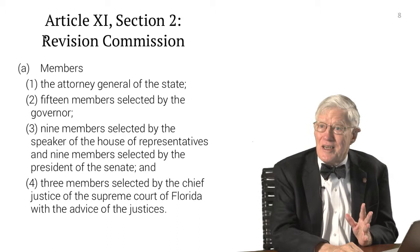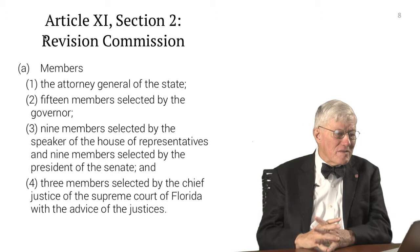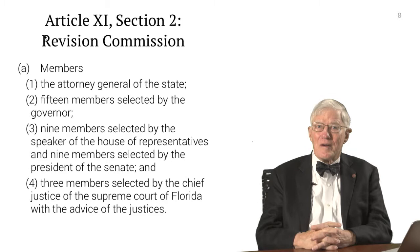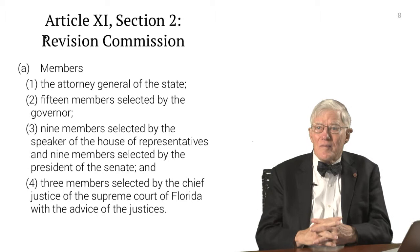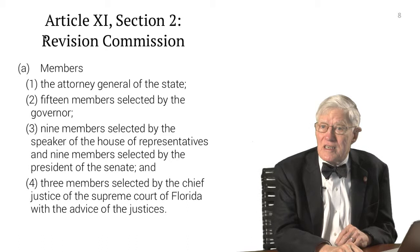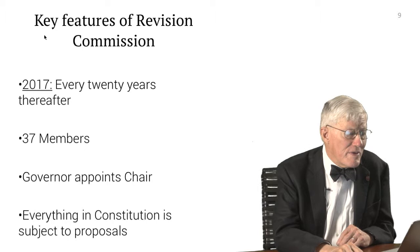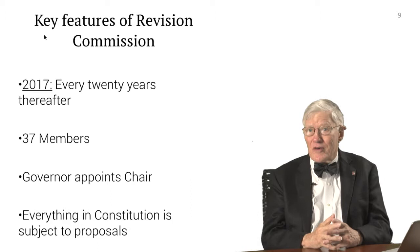Section 2 of Article 11 gets us into the revision commission — now a constitutional Constitution Revision Commission. The membership is important: the Attorney General of Florida is automatically a member; 15 members are appointed by the governor; 9 members are appointed by the Speaker of the House and 9 by the President of the Senate; and 3 members are selected by the Chief Justice of the Supreme Court after getting advice from the other justices. It meets every 20 years — the next meeting will be 2017 — and every 20 years thereafter. It has 37 members total, and the governor appoints the chair.